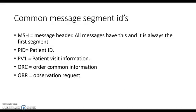Common message segment IDs include the message header, which is always the first segment and contains information about the actual message. Patient ID contains all the information about the patient. PV1 is all the patient visit information — it contains things like account number, inpatient or outpatient status, and location for the patient. Note that segments are numbered sequentially, so if there was another patient visit segment, it would be PV2.